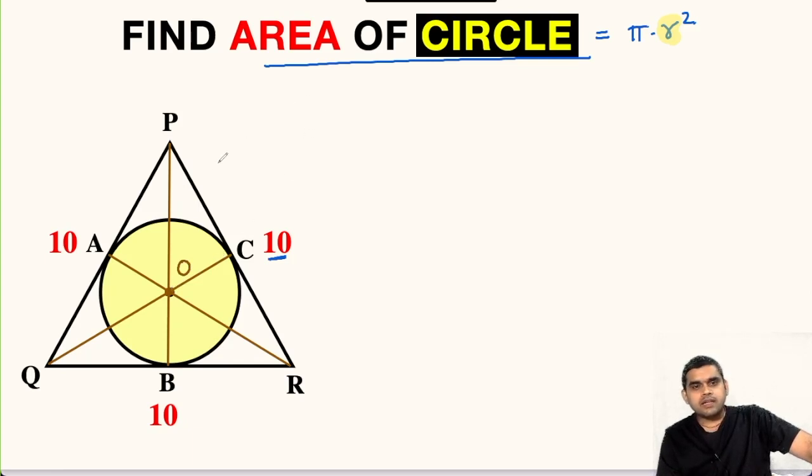We know a property that if we have an equilateral triangle then the centroid of an equilateral triangle and the incenter coincides. So this point O is the centroid of the triangle, also the center of this incircle. So this is a property.